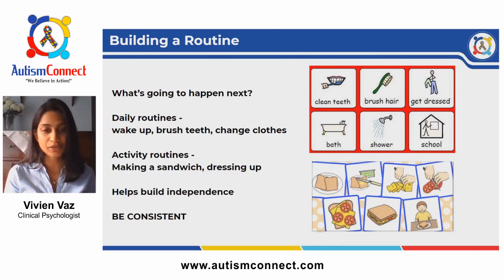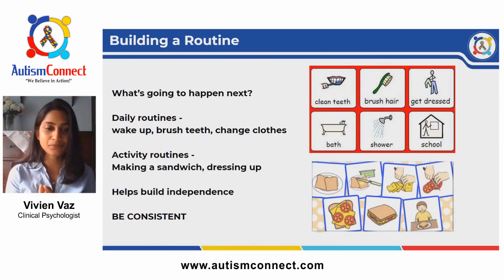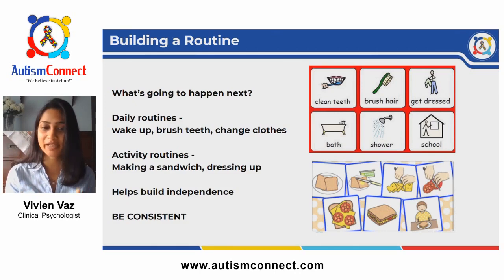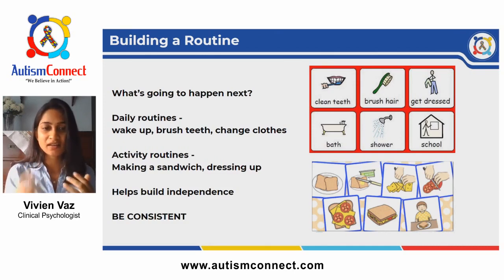For example, making a sandwich is a routine with the following steps: first, keep all the ingredients ready. Step one: put two slices of bread on a plate. Step two: apply butter to both slices. Step three: slice up the cheese. Step four: slice up the tomatoes. Step five: put the slices of cheese and tomato on one slice of bread. Step six: cover with the other slice. Step seven: your sandwich is ready to eat.